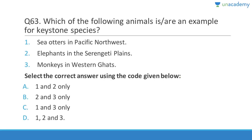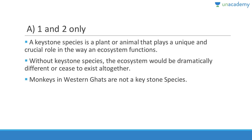Question sixty-three: Which of the following are examples of keystone species — sea otters in the Pacific Northwest, elephants on the Serengeti plains, monkeys in the Western Ghats? Sea otters — absolutely correct. Elephants in Serengeti — correct. But monkeys in the Western Ghats — removing them would not cause major chaos in the ecosystem. Answer is A, one and two. A keystone species plays a unique and crucial role in ecosystem function. Without keystone species the ecosystem would be dramatically different or may cease to exist altogether.